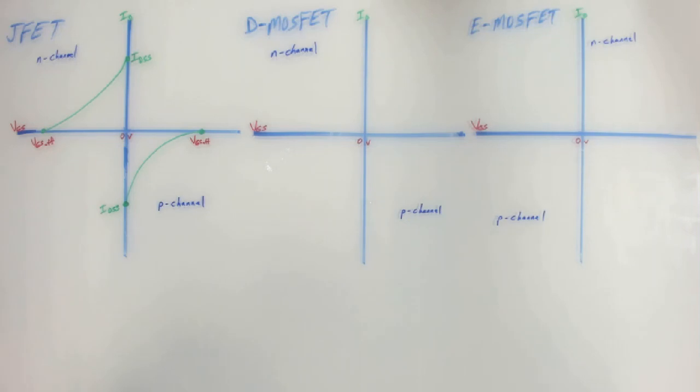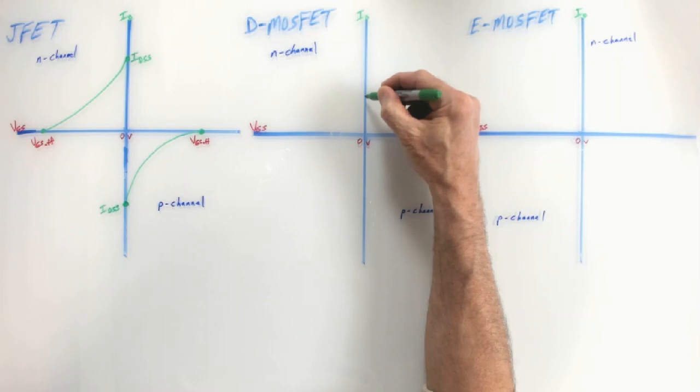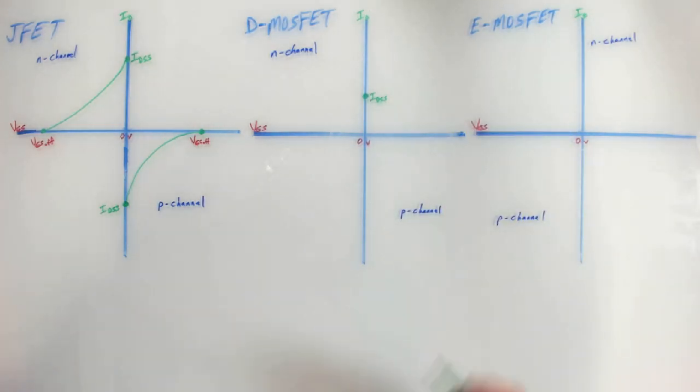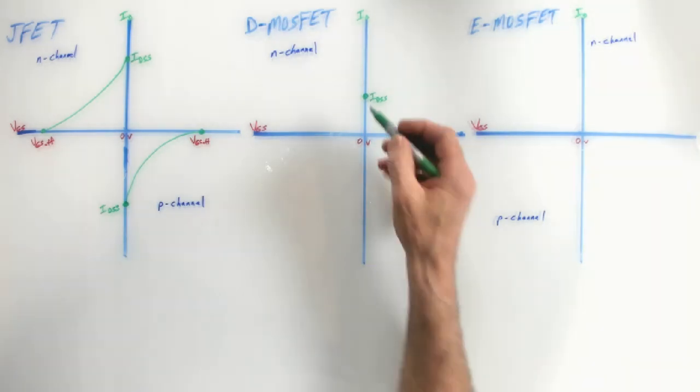The D-MOSFET, however, you can increase or decrease. So D for depletion, but it actually can be depleted or enhanced as far as the drain current goes. If we again start with the zero volt characteristic, well, with zero volts on the gate of a D-MOSFET for an N-channel, there will be some amount of drain current. And that again is IDSS because it's the amount of drain current with the gate shorted to the source. So that still has a value for that.